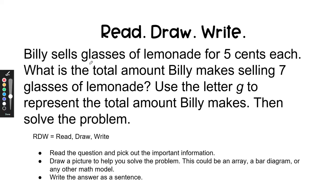Billy sells glasses of lemonade for 5 cents each. What is the total amount Billy makes selling 7 glasses of lemonade? Use the letter G to represent the total amount Billy makes, then solve the problem. So 5 cents each, 7 glasses, G is the unknown — the number we don't know is the product, so G goes in the place of the product. We know the two factors are 5 and 7.